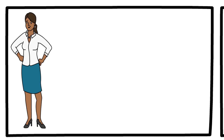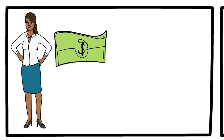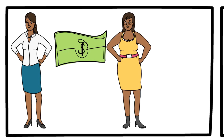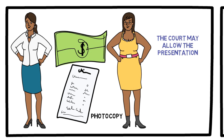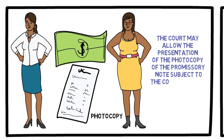For example, Karla borrowed money from Perla. Karla executed a promissory note in favor of Perla. Karla did not pay the loaned money. During the trial, Perla presented to the court a photocopy of the promissory note. Here, the court may allow the presentation of the photocopy of the promissory note subject to the condition that the original be later presented.